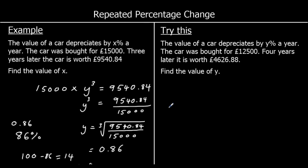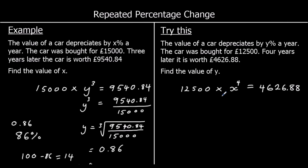The value of a car depreciates by Y% a year. The car was bought for £12,500. Four years later it's worth £4,626.88 — what is the percentage decrease? The original value was £12,500, and that multiplied by something four times gave us £4,626.88. To get X by itself, firstly divide both sides by £12,500. So our multiplier to the power of 4 is £4,626.88 over £12,500.